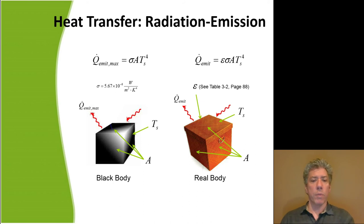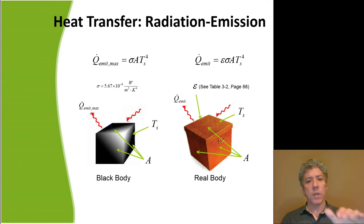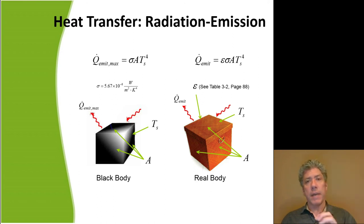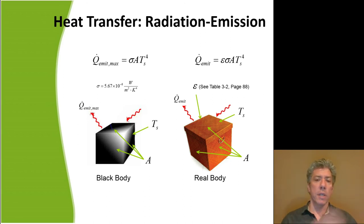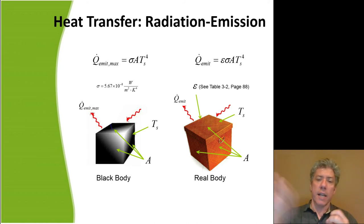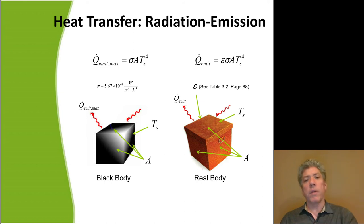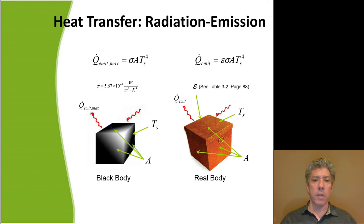We have to define a couple of things to work with radiated heat transfer. The equation is Q-dot emitted max — every bit of matter above a temperature of absolute zero will radiate energy. It will send out photons, losing energy in the process. If the electrons are in an excited state they'll move down to a lower energy level and let go of a photon. It's also possible that matter will accept a photon and excite an electron into a higher state. Q-dot emitted max quantifies the heat transfer rate from a body that is radiating out energy.